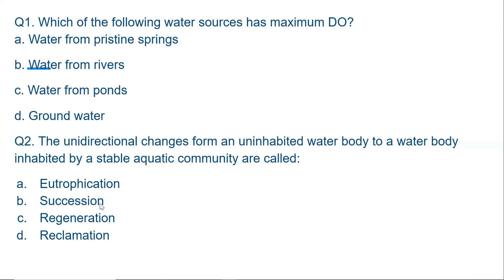The whole process by which a water body becomes a stable aquatic community is called succession. If undisturbed, it will sustain. But when it's an unstable aquatic community with algal growth, it dies, dissolved oxygen decreases, and conditions worsen — that is eutrophication. So the key words are: unidirectional and stable — the answer is succession. I'll make a short video on succession for better understanding.